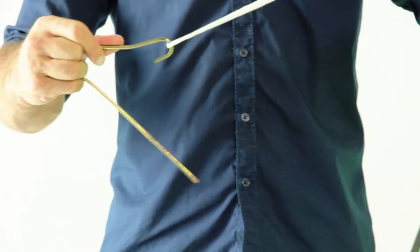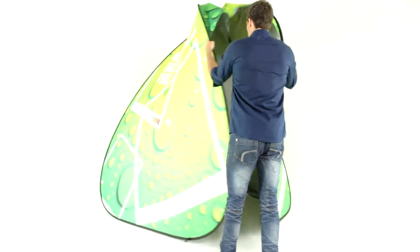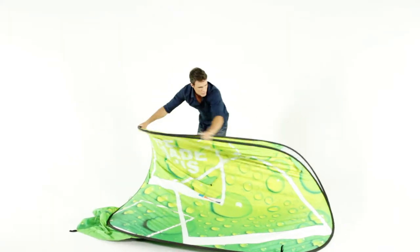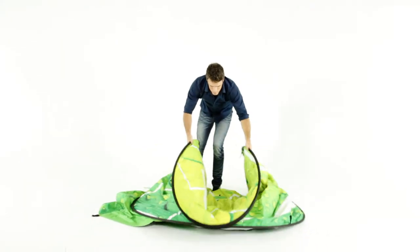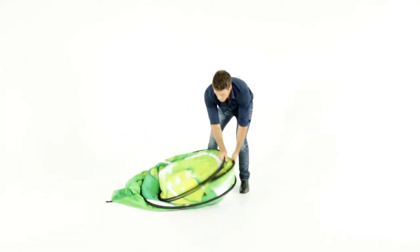To take the cabana down, first remove the pegs from the ground. Push the sides together. Holding the cabana in a vertical position, stand behind it. Holding the side bands, push forward and the cabana will fold in.